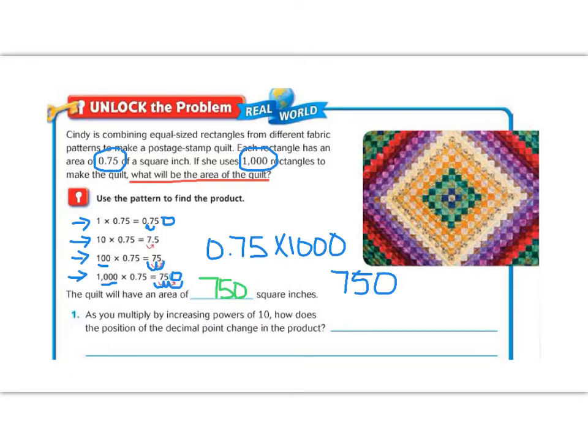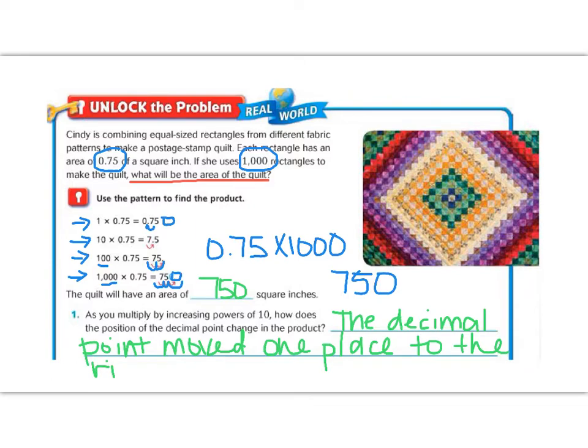There's a question below we need to answer. It says, as you multiply by increasing powers of 10, how does the position of the decimal point change in the product? Well, if we look at where those swoopies helped us move, then it was moving to the right every single time, and it was moving one place value every time I added a power of 10. So let's write, the decimal point moved one place to the right. So let's write, the decimal point is, with each power of 10.